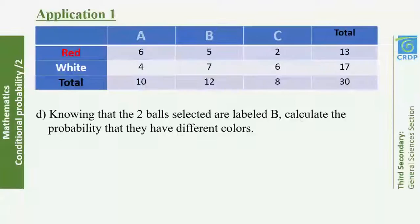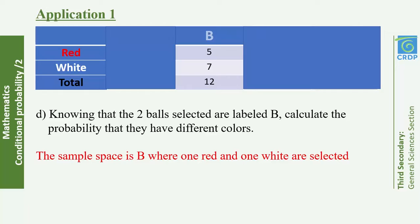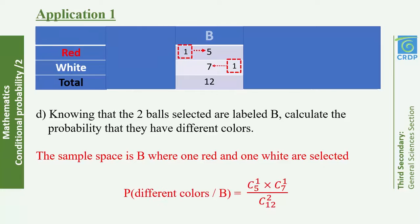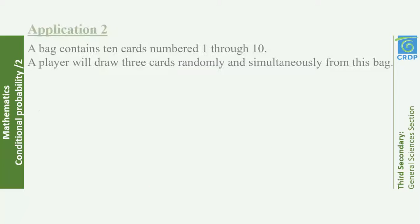Part D: Knowing that the two selected balls are labeled B, calculate the probability that they have different colors. To have different colors we must choose one ball from the white group and one from the red group. There are 5 white balls labeled B and 7 red balls labeled B, with 12 balls labeled B total. So P(different colors | labeled B) = C(1,5) × C(1,7) / C(2,12).